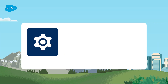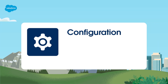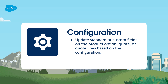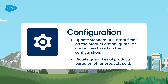The first is configuration. Price rules let you update standard or custom fields on the product option, quote or quote lines based on the configuration. For example, you might use price rules to display requirements or set approval thresholds for representatives. You can use a price rule to dictate quantities of products based on other products sold, like to include a pair of socks for every three pairs of shoes a customer buys at Cloud Kicks.